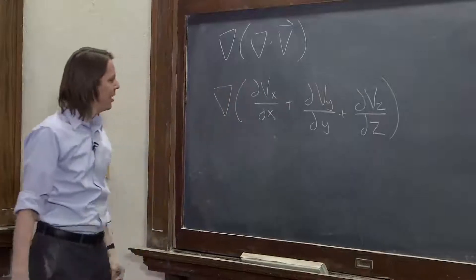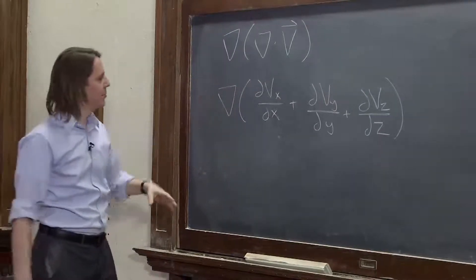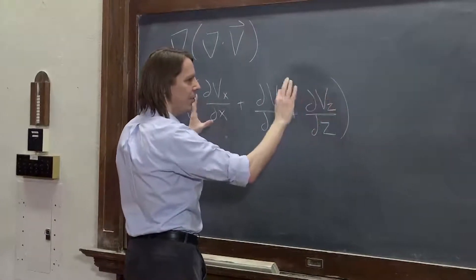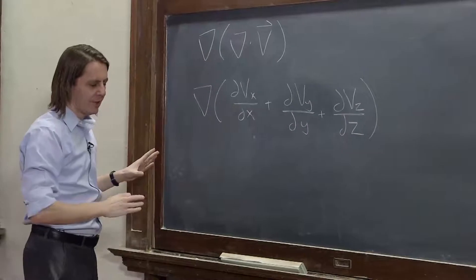So we've talked about that before. So now we've got to take the gradient of this, which basically means we take this whole thing ddx on the i hat, the whole thing ddy on the j, and the whole thing ddz on the k.